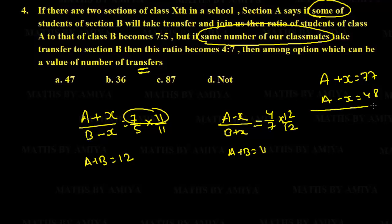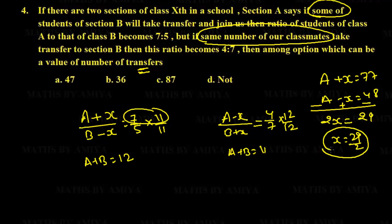Subtracting the second equation from the first: 2x = 29, so x = 29/2. In ratio terms, x must be a multiple of 29/2. Among the options, 87 is a multiple of 29/2, so the answer is 87. When the transfer number is the same in both directions, set up equations, cross-multiply the summed ratios, and solve for x.